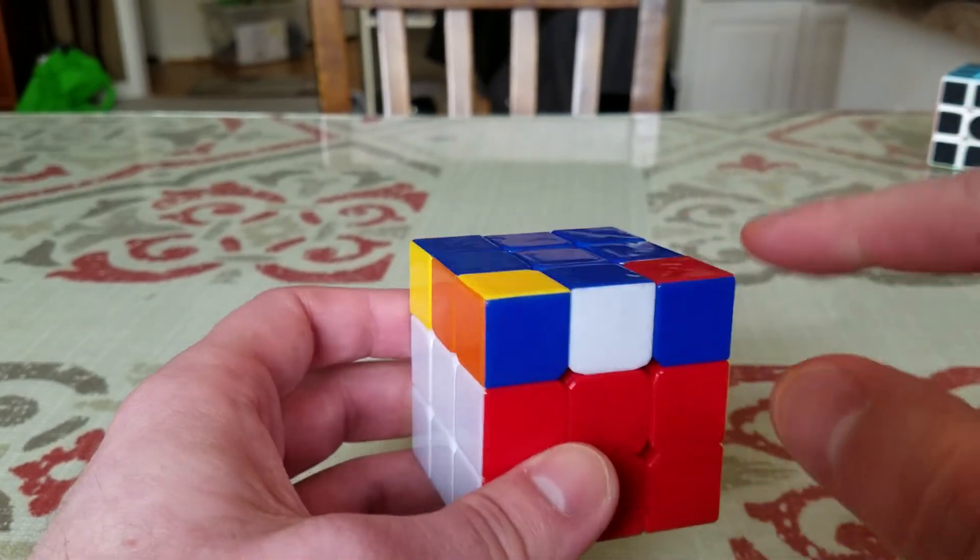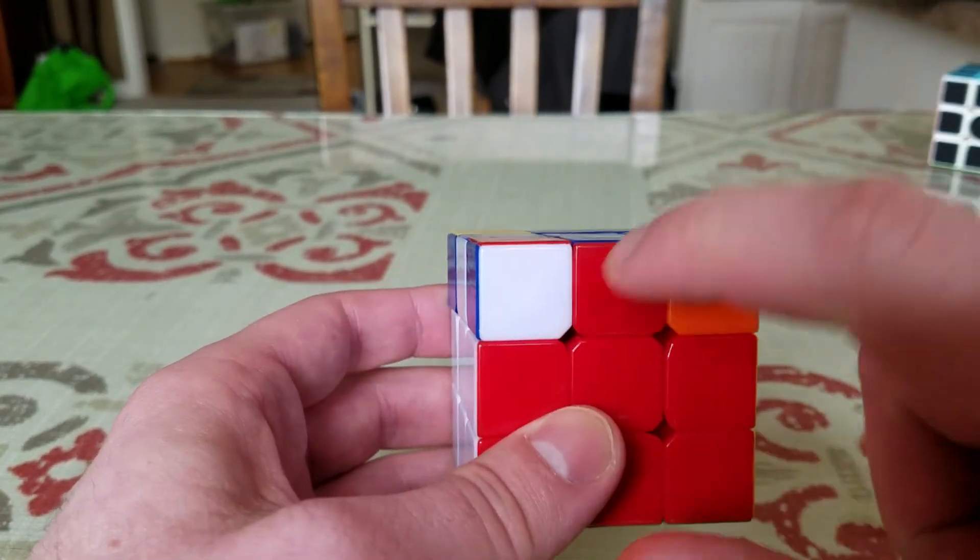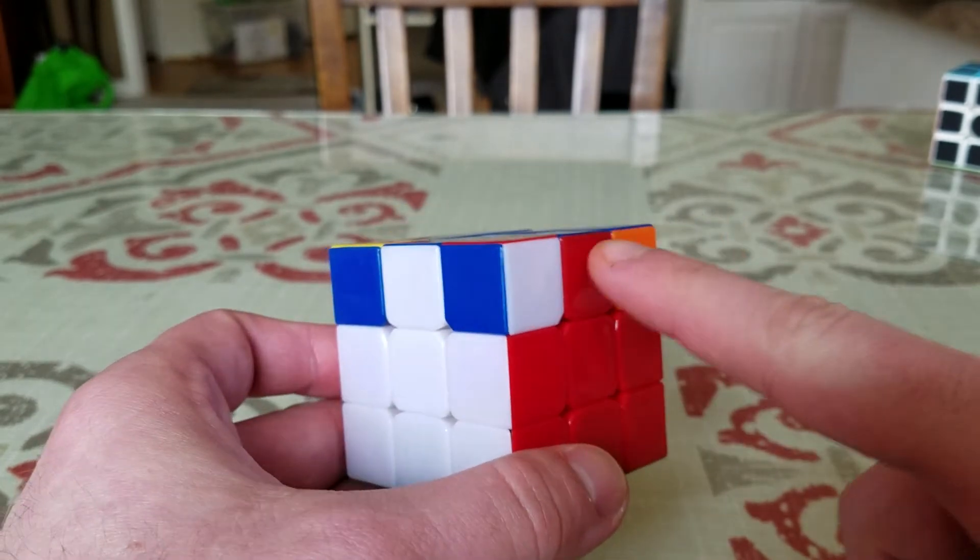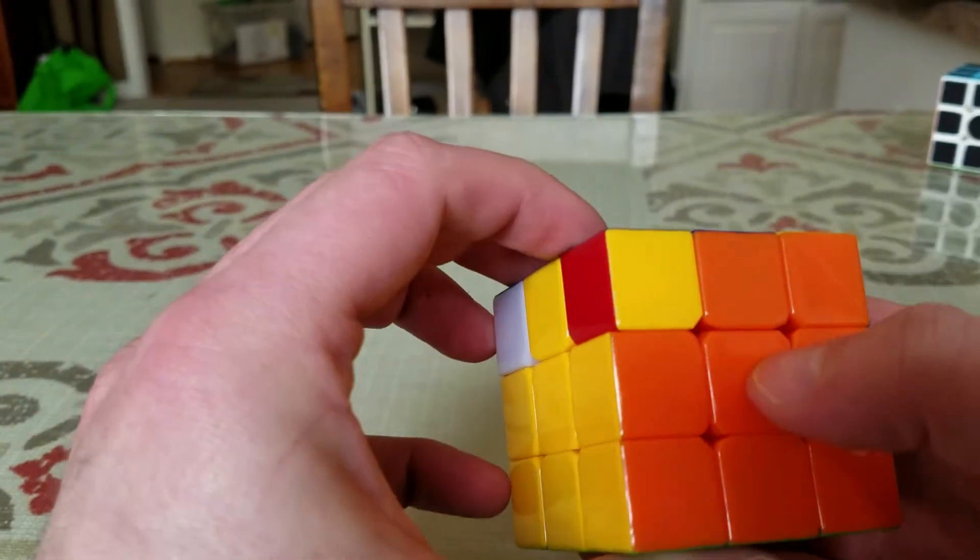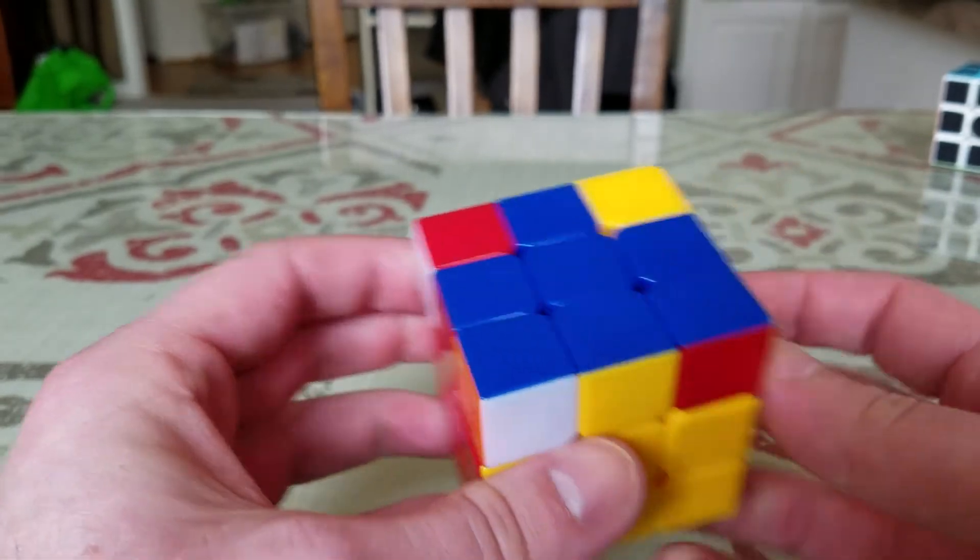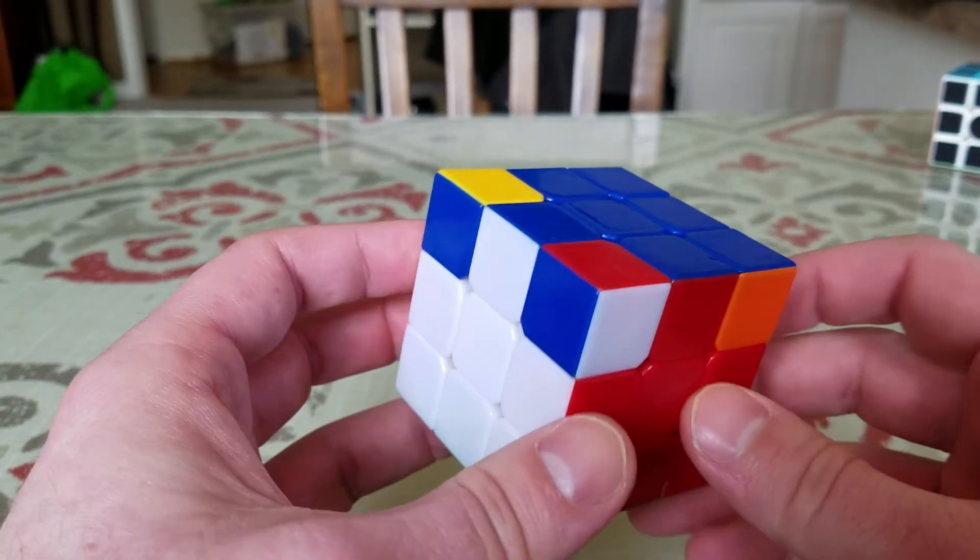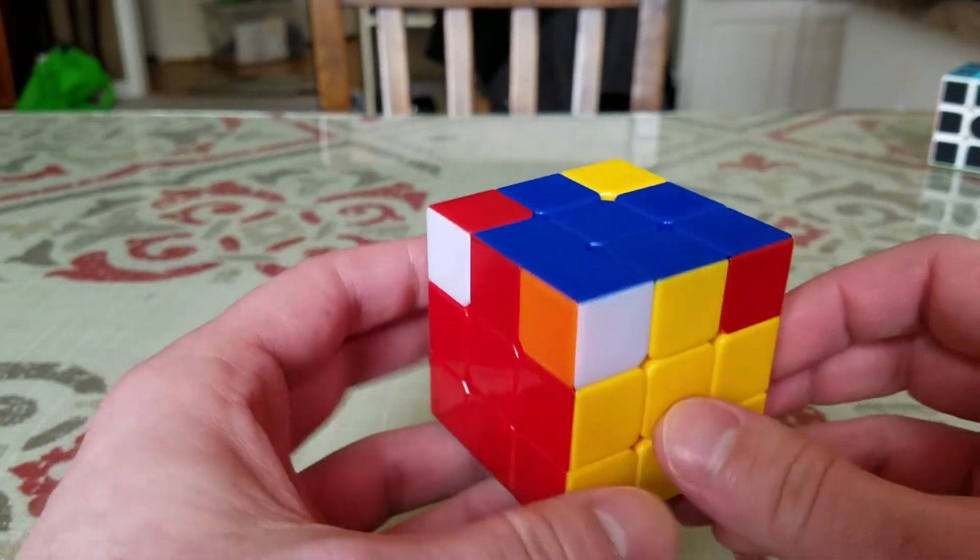Lastly, spin the top to reorient all the colors so they all line up. You should notice that the red, white, orange, and yellow all line up. That's all it takes for this step. There is, however, one special permutation.